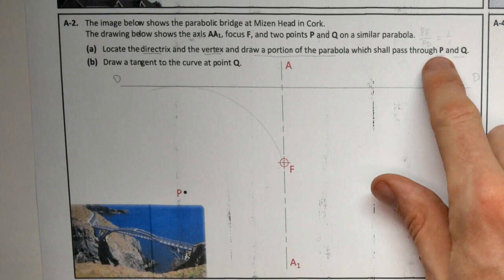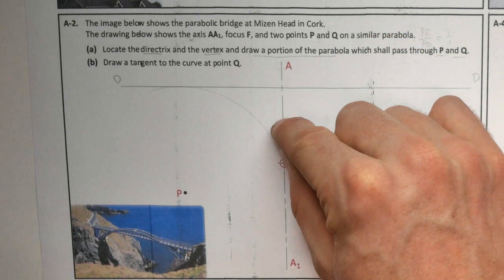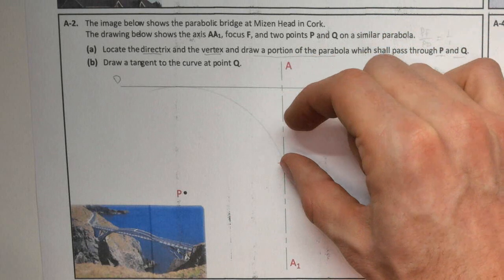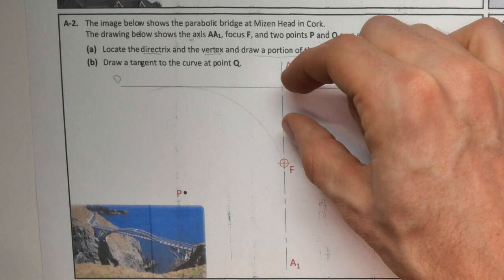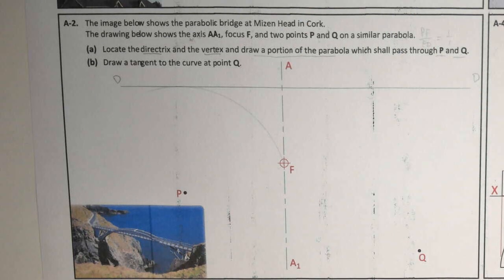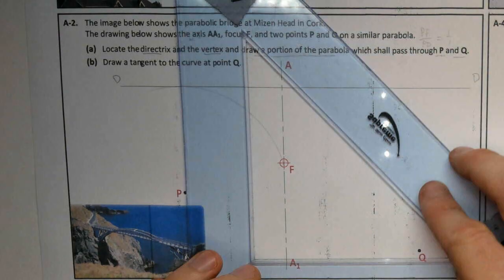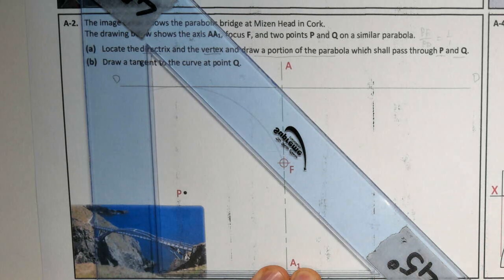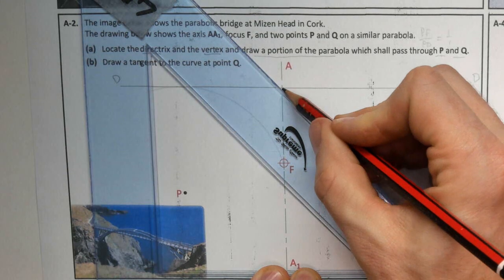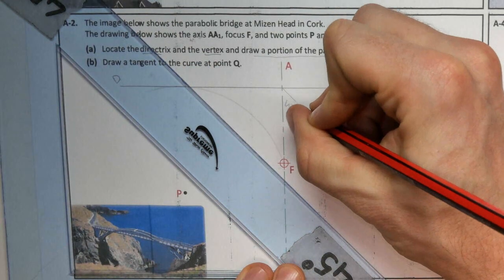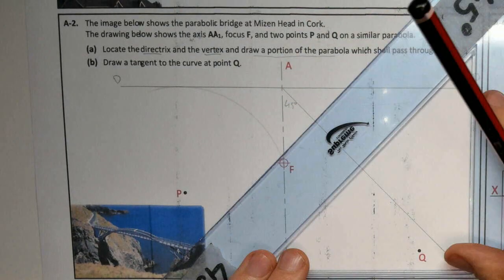A couple of ways we can do that. PF over PD, so the vertex is a point on the curve. The distance from F to P would be the same as P to D. We could bisect that, but we know, because it's a parabola, our line of eccentricity is going to be at 45 degrees.